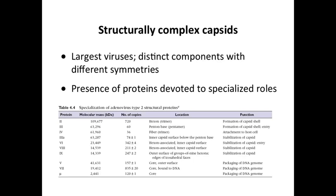Here, for example, is adenovirus, which is quite a large virus particle. It's got two different kinds of structural units, the hexon and the penton, and these form the capsid shell. Those two proteins form the pentons and hexons in the shell that give you the icosahedral shape.